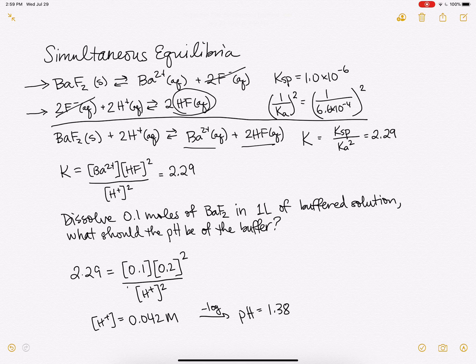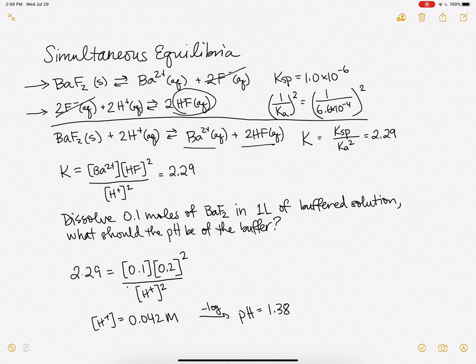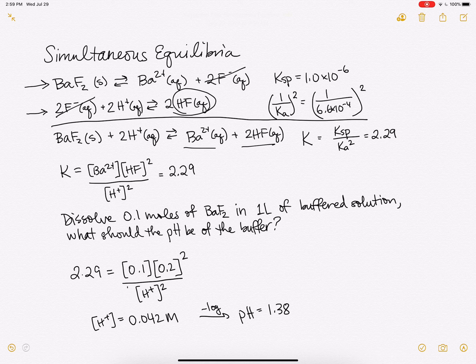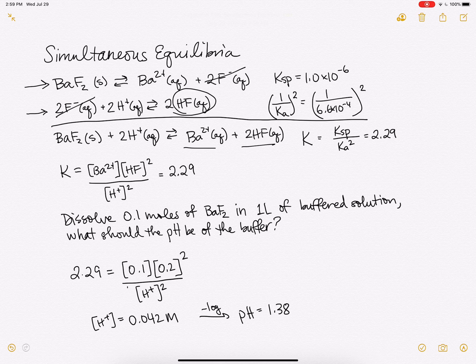Number two, we're combining these reactions and there's rules for that. We reversed the Ka, which is the inverse here. And we multiplied by 2, which makes it squared. And when we add the reactions together, we're multiplying those Ks together. So that's how we get our overall K here.